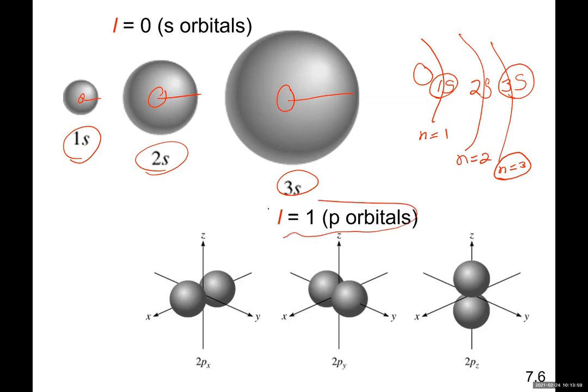When quantum number L is equal to one, you are going to have these double-lobe shapes in the space around the nucleus, where these electrons are scattered. You're going to see that you have three of these electron cloud shapes, depending on the orientation in space.